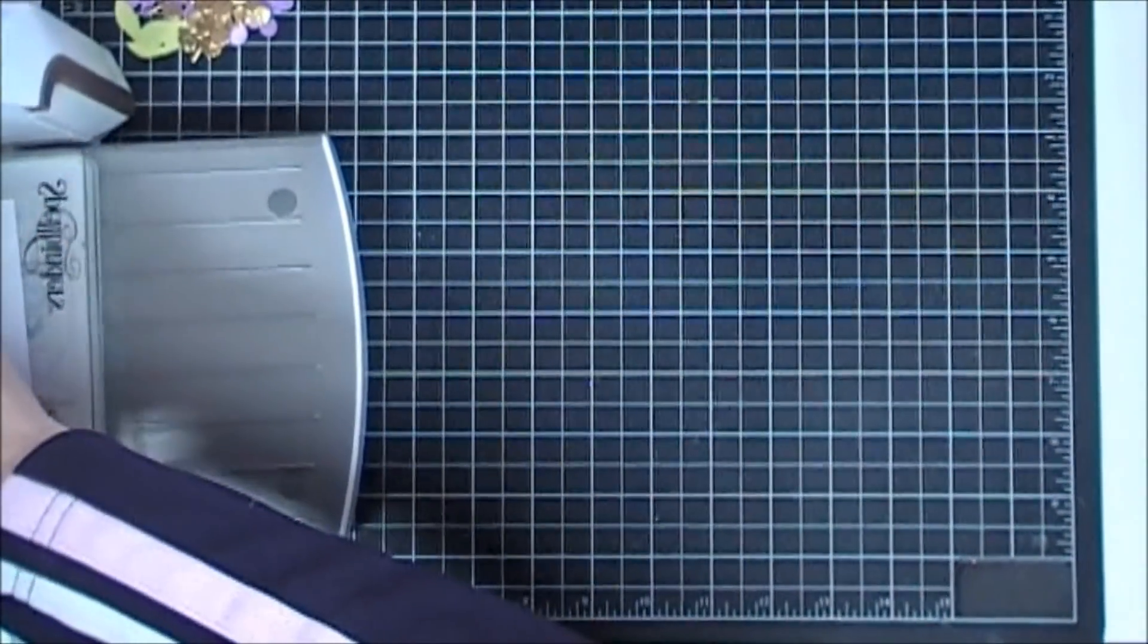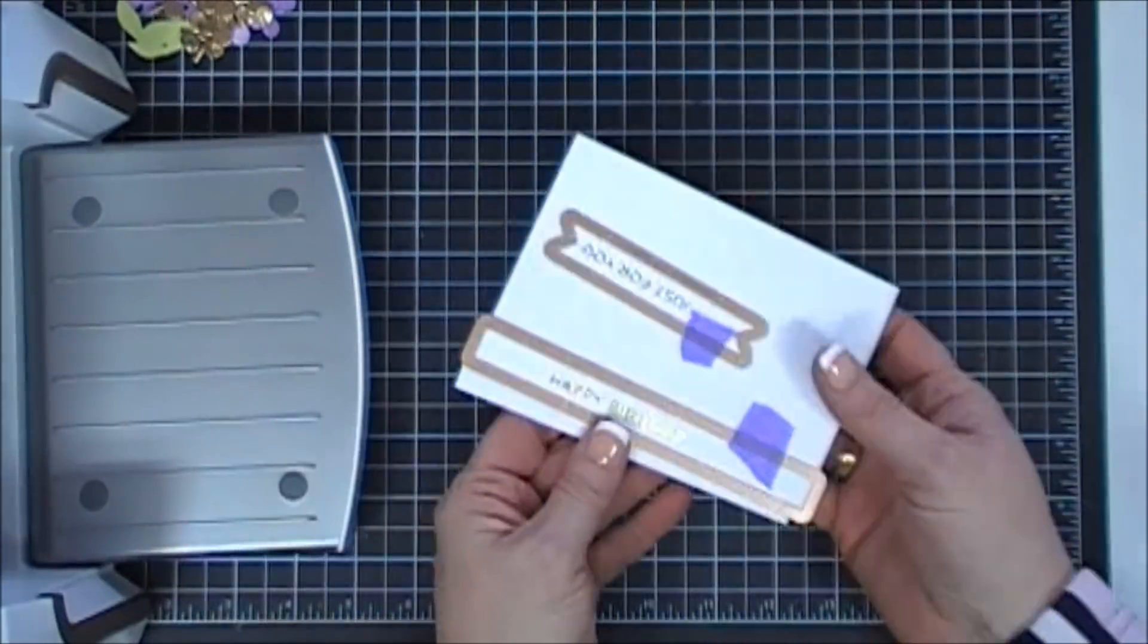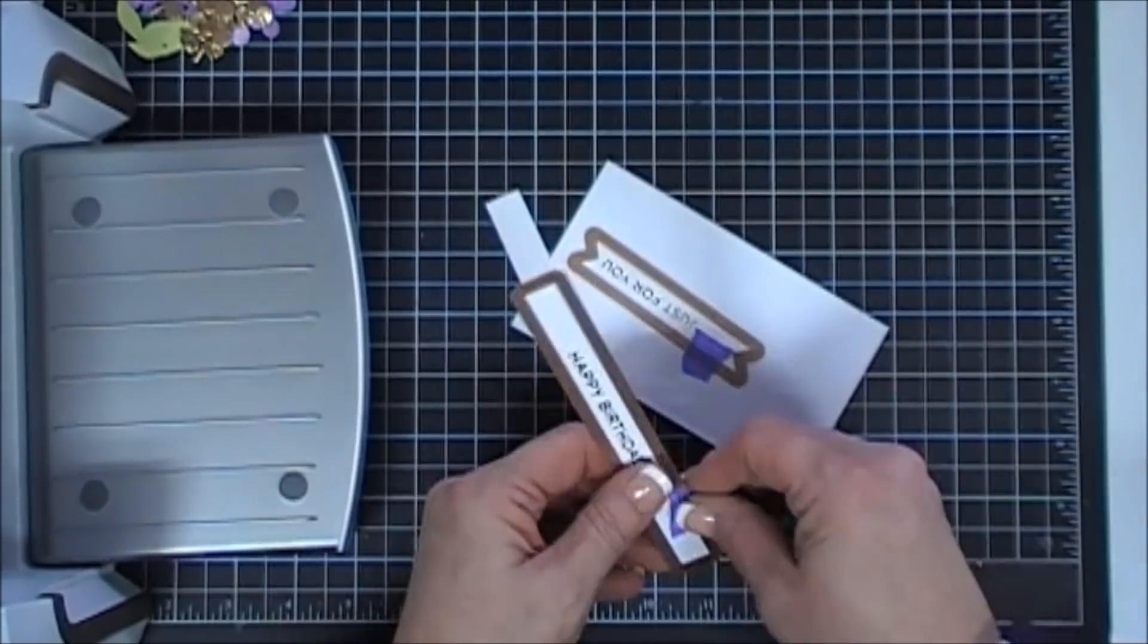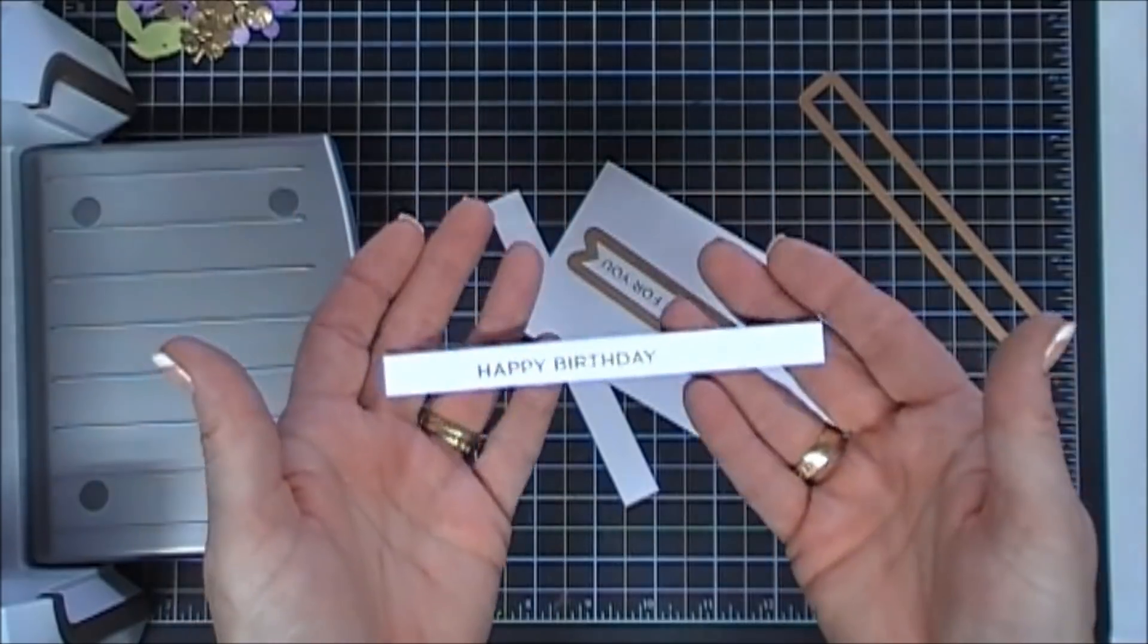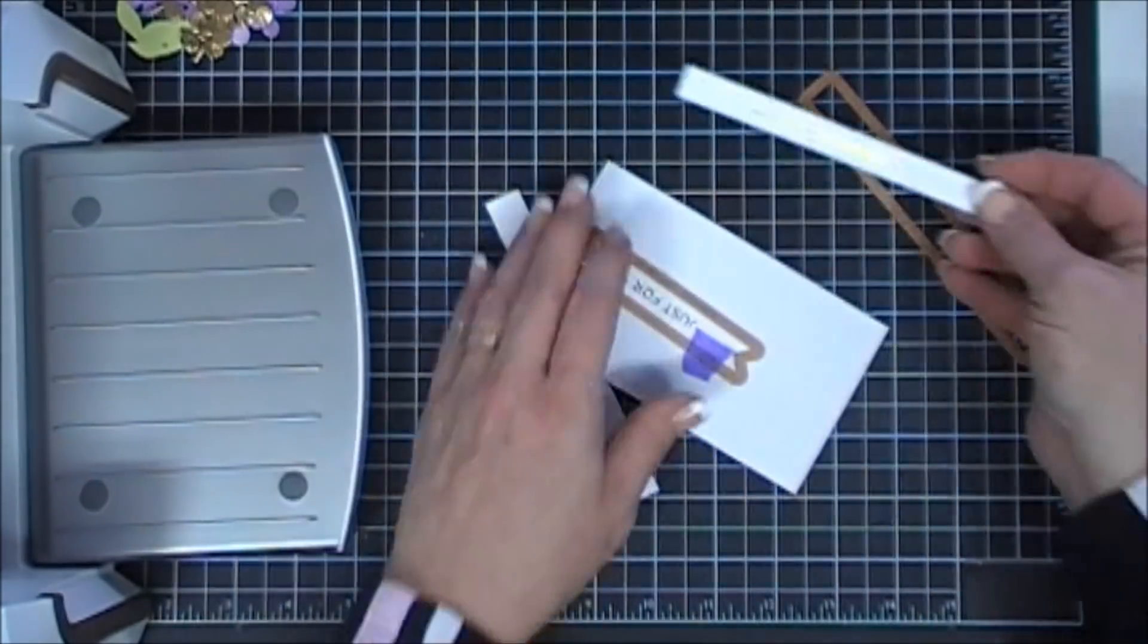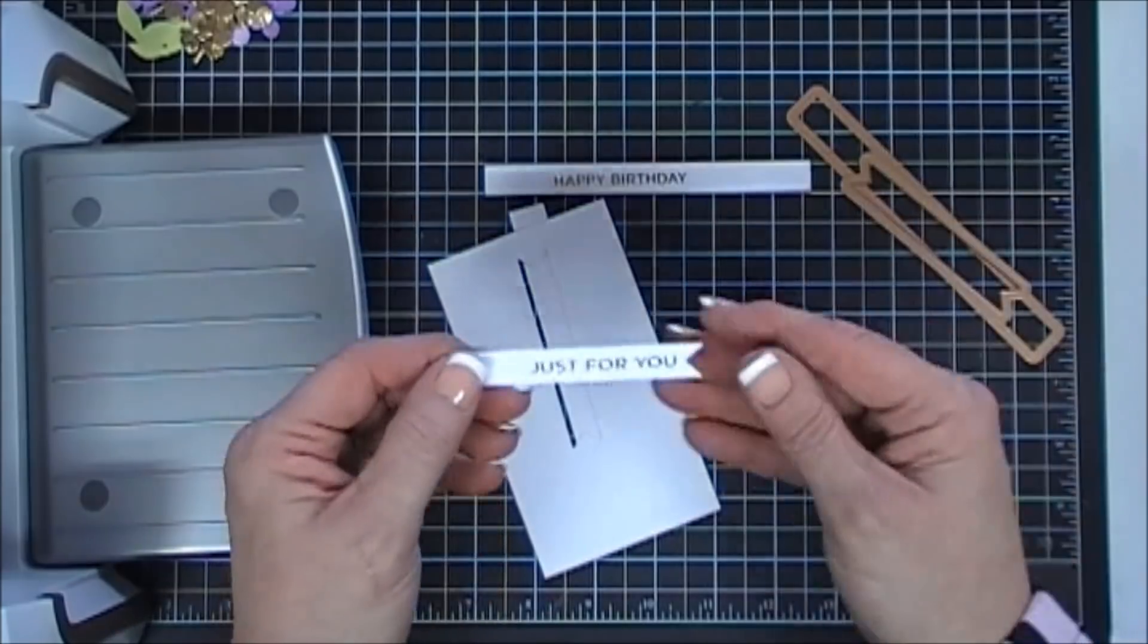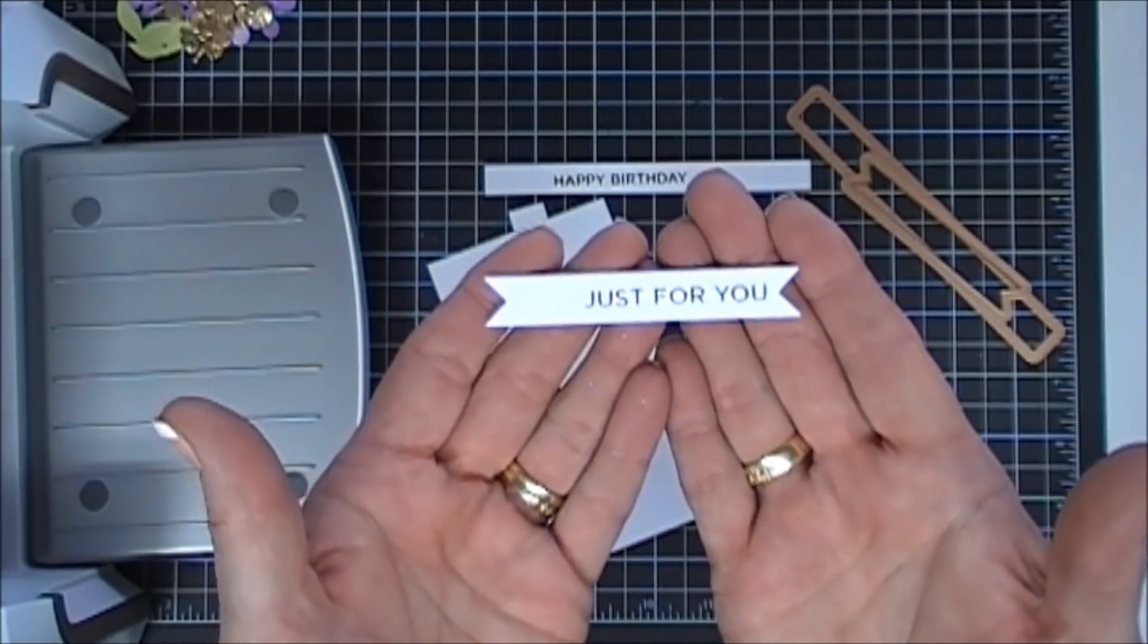I was so excited about the sentiments. I like things that coordinate, and so if you can foil sentiments, I think it's wonderful. I love the block style of the sentiments. So there's my happy birthday and then here is my just for you. Super pretty.